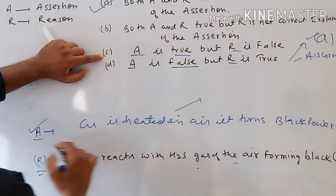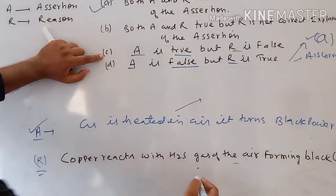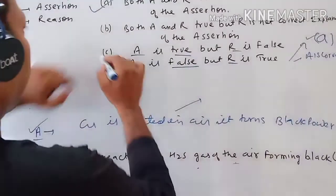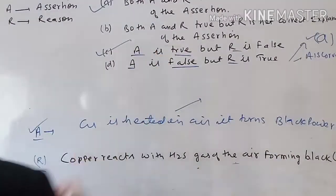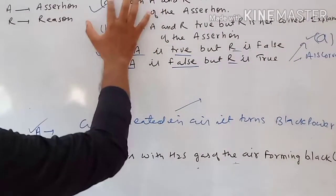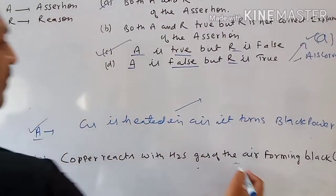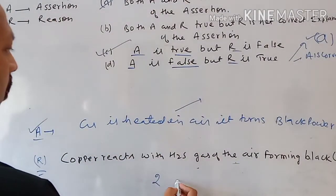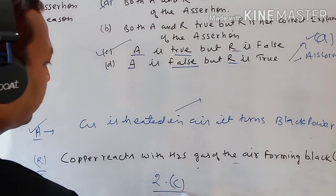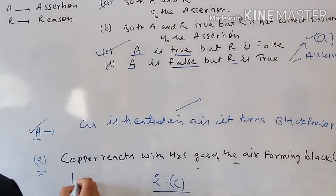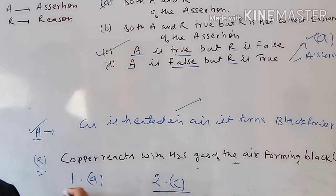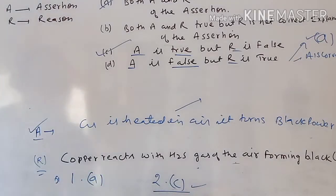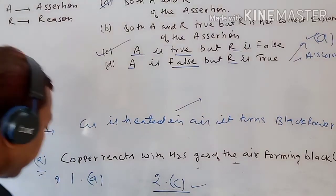So Assertion is true but Reason is false. According to the options, this matches option C. Therefore, for question number two, the answer is option C. Summary of answers so far: Question 1 = option A, Question 2 = option C.